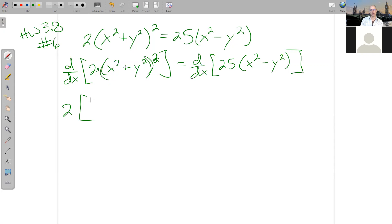And then here I have an outer function, which is a square, and an inner function, which is x squared plus y squared. So I have the chain rule going on. So first, I have to take the derivative of the outer function, the square. So that says 2 times parentheses to the first power. So I apply the power rule to the parentheses, then I take the derivative of the inner function.